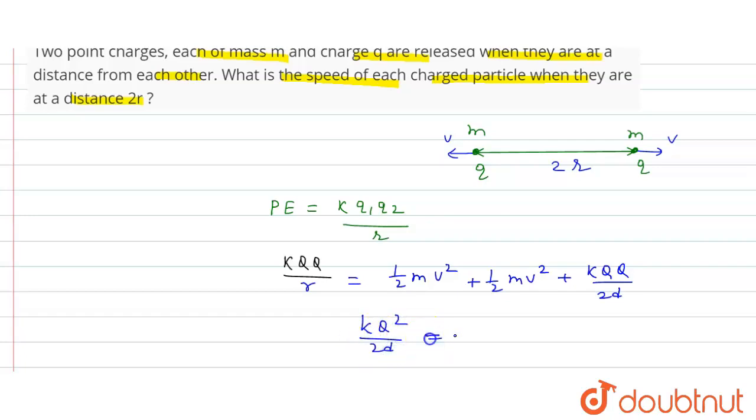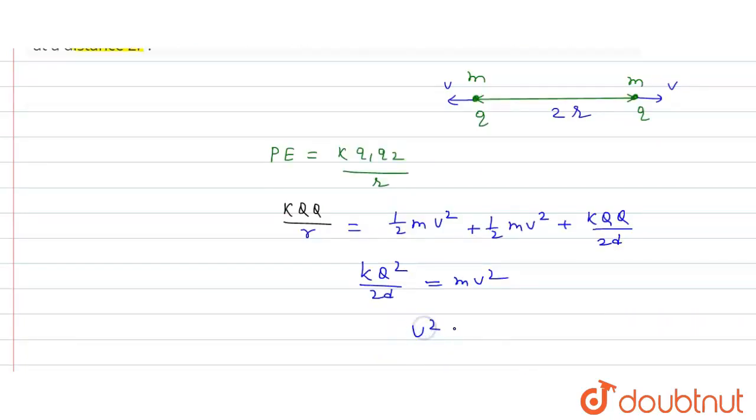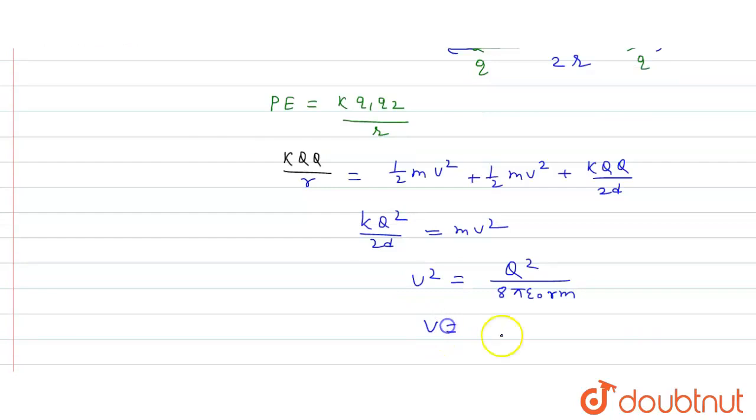So from here, k q square upon 2r is equal to m v square. So v square is equal to q square upon 8 pi epsilon naught r into m. So velocity v will be q upon square root of 8 pi epsilon naught r into m.